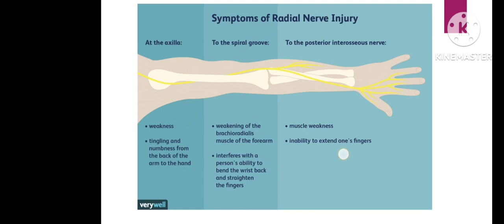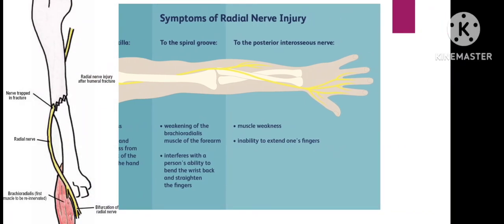Compression of the radial nerve can affect the wrist joint, elbow joint, and surrounding areas. If the spiral groove is affected, the posterior interosseous nerve is also affected. A mid-shaft fracture of the humerus can damage the radial nerve as it lies in the spiral groove.